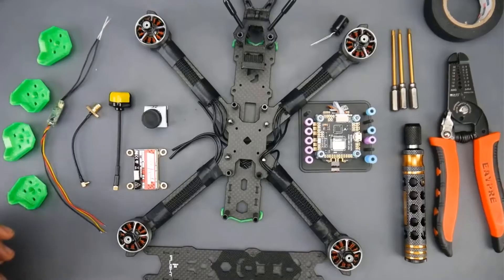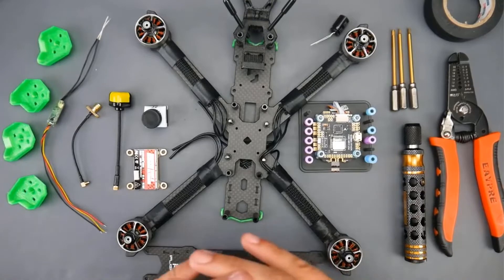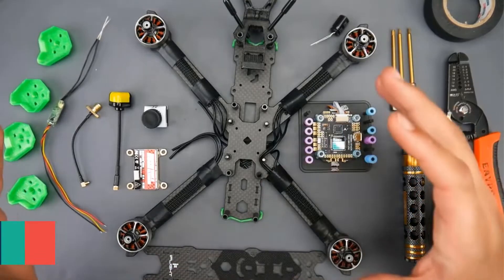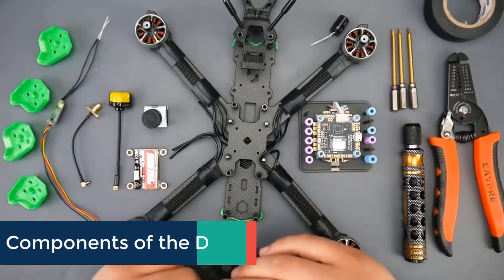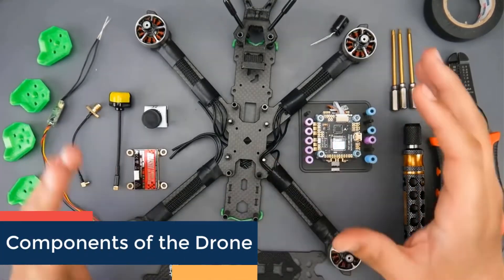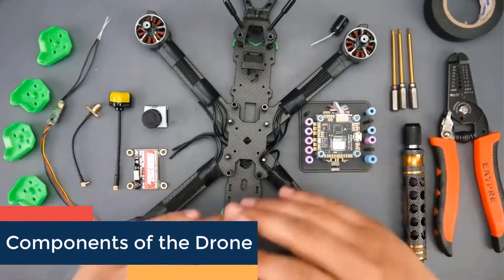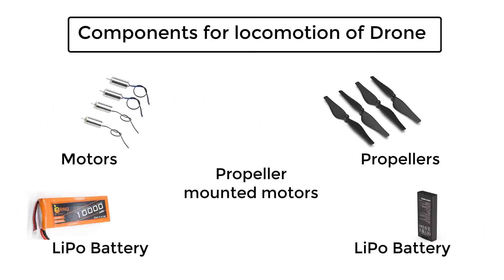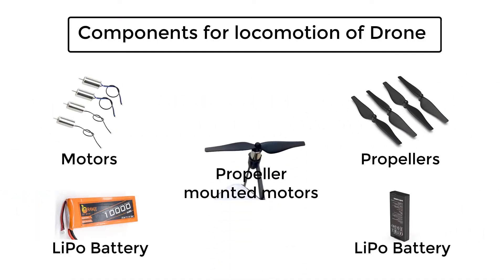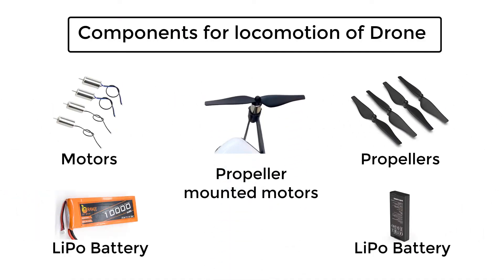Speaking of onboard sensors, let's talk about all the components of the drone which help it perform various tasks. For making all movements in different directions, drones have propeller-mounted motors which are powered by a battery pack.